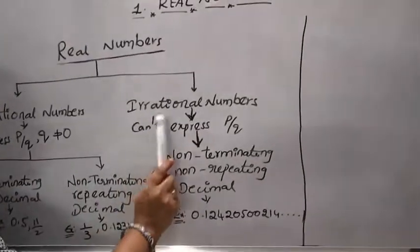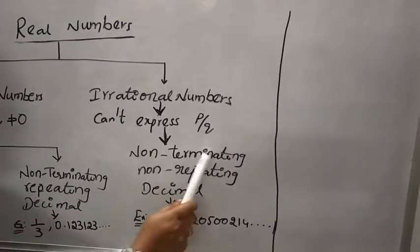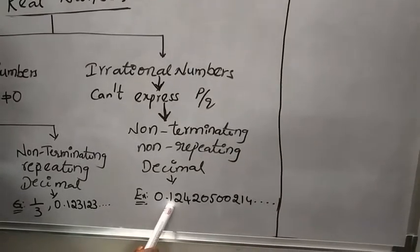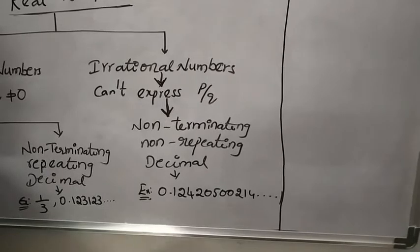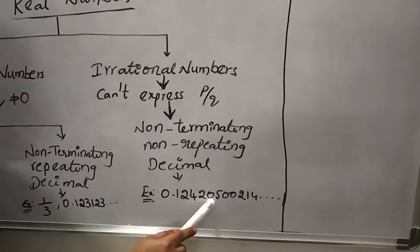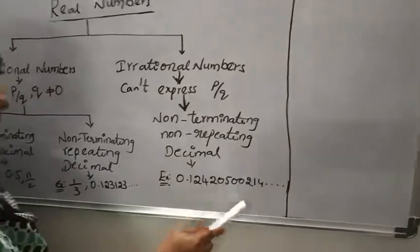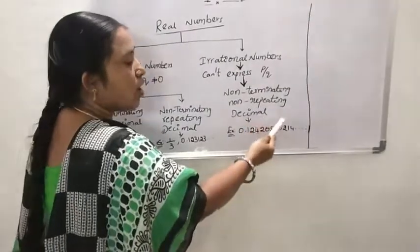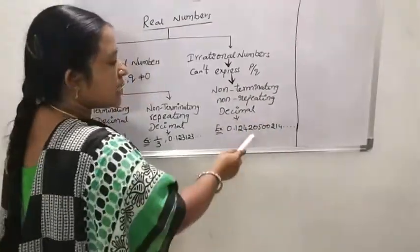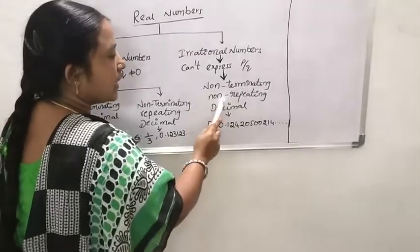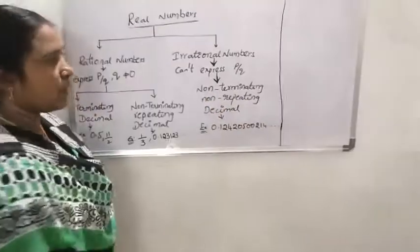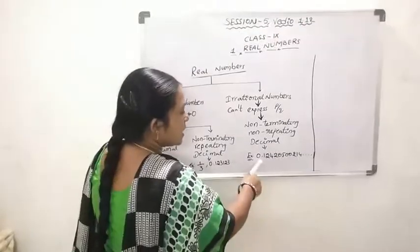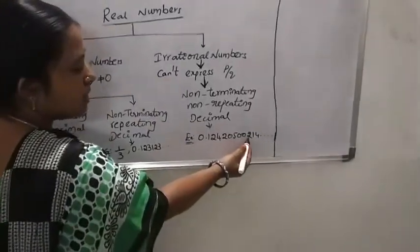Coming to irrational numbers, here it is non-terminating, non-repeating decimal. When we are dividing a number with another number, here also we are not getting remainder 0. The decimal part is not ending and a single digit or couple of digits is not repeating. Such type of decimals are called non-terminating, non-repeating decimals, like 0.1242050214 and so on.